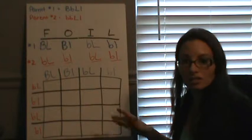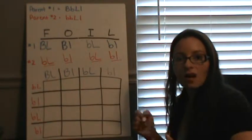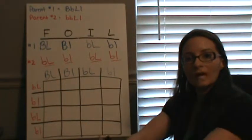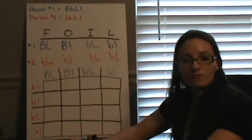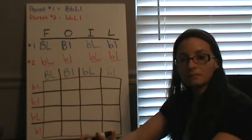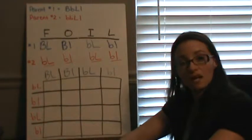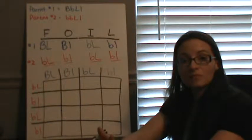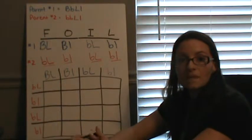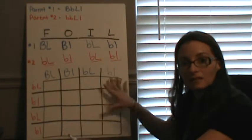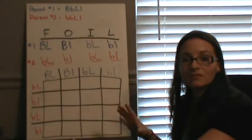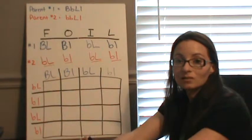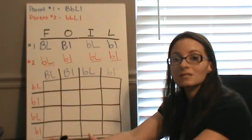Once you've filled in the parent genotypes, you can start filling in the boxes for offspring combinations. A couple of rules: always go in alphabetical order, and always place your uppercase letters first. B's go before L's alphabetically, and uppercase B before lowercase b, then uppercase L before lowercase l. This will make it much easier when reading the table to figure out the different genotype combinations, because big B, little b is the exact same thing as little b, big B — writing it in a consistent order makes it easier to read.